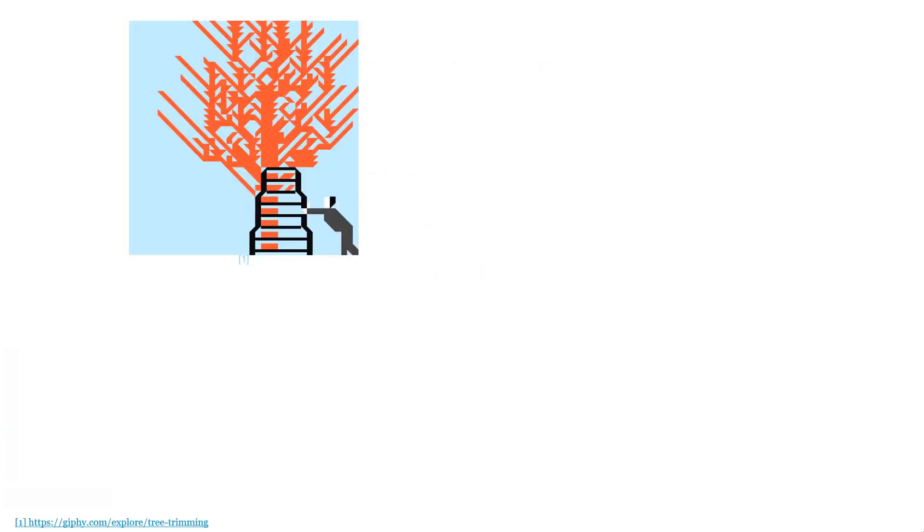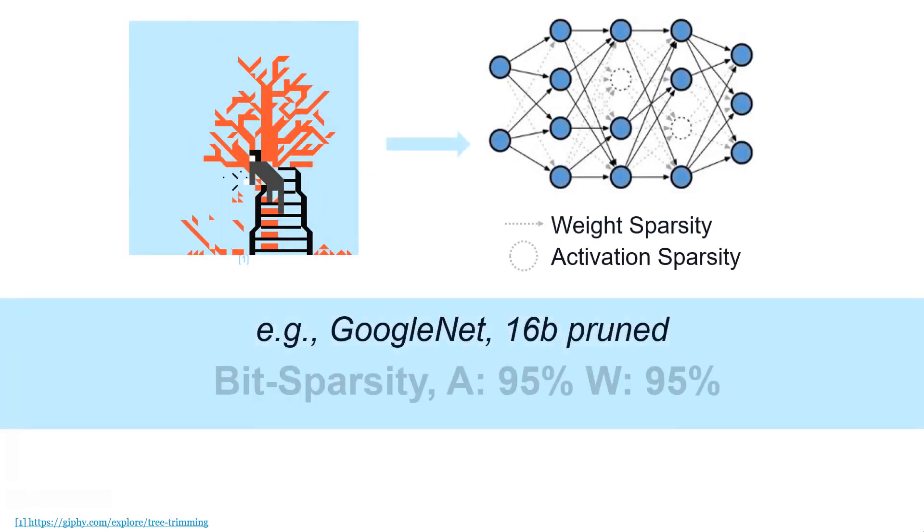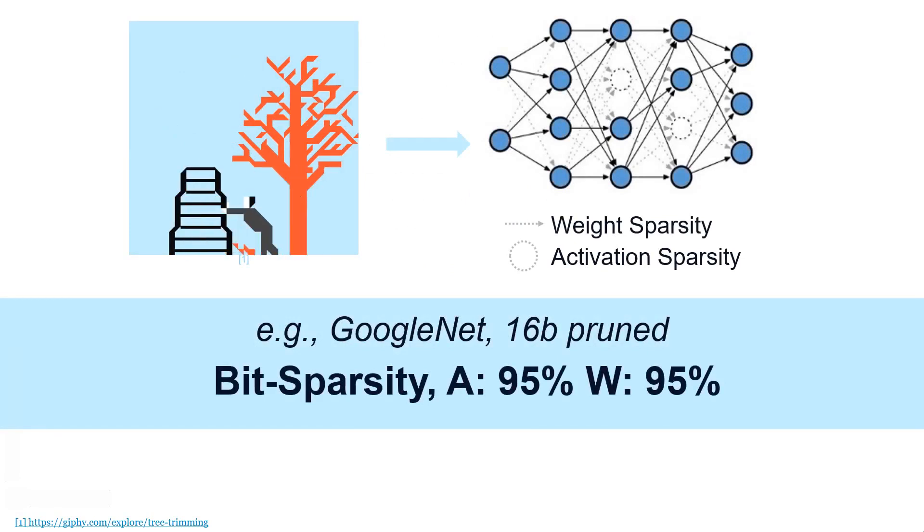Leconic doesn't require but rewards algorithmic approaches that enhance this value property, such as pruning. For the pruned GoogleNet, more than 95% of the activation and weight bits are zero.